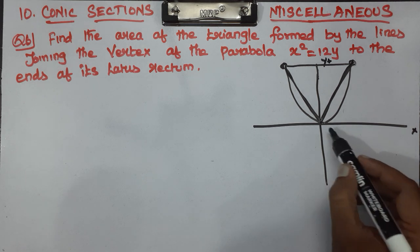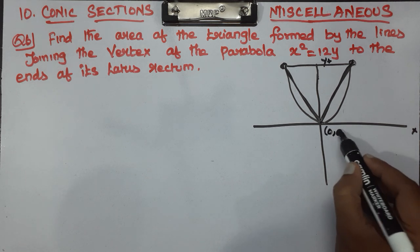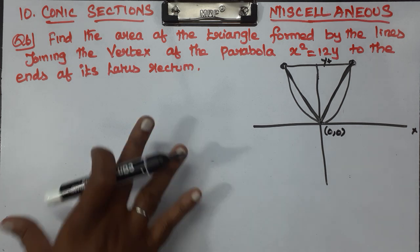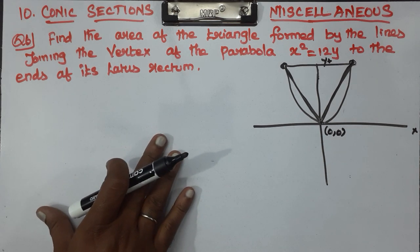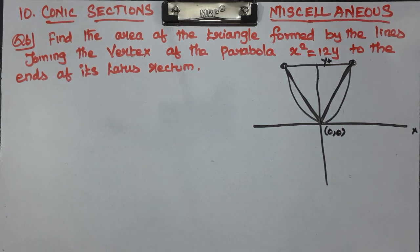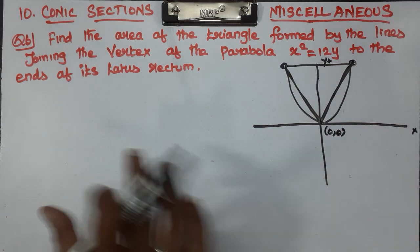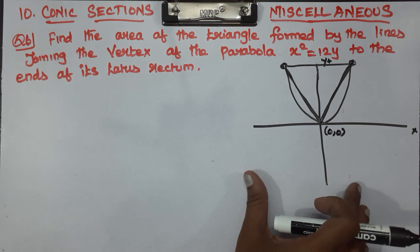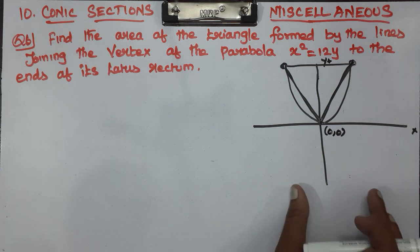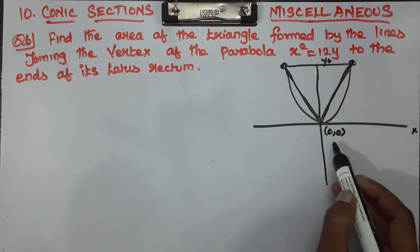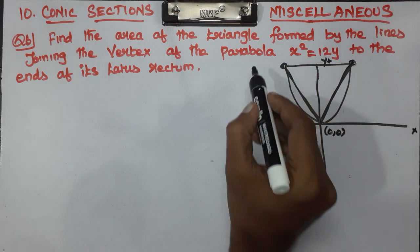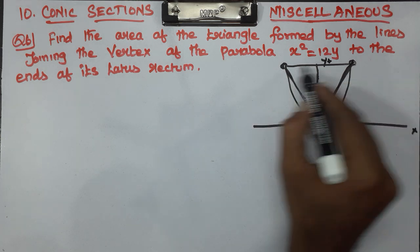If you know this point, it is (0, 0) — the vertex. This is a, this is minus a. If you add the latus rectum, you get 2a. So from the diagram, you can answer the question.